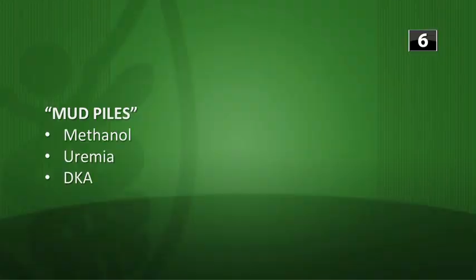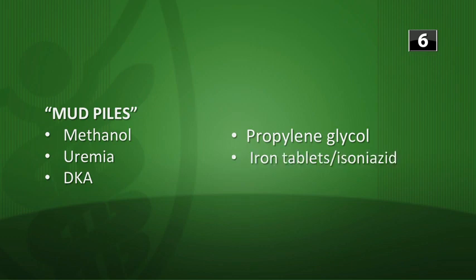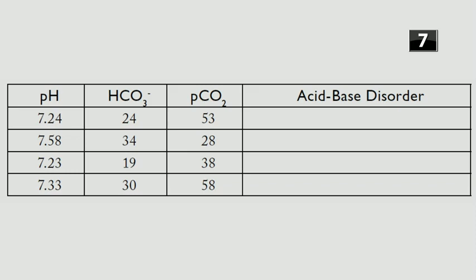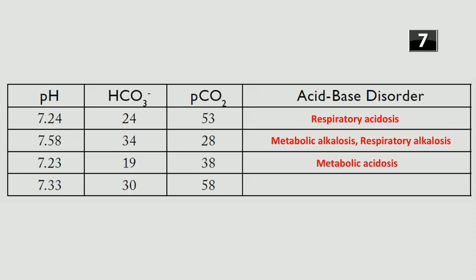End-of-session quiz: first question — causes of high anion gap metabolic acidosis. The mnemonic is MUD PILES: methanol, uremia, DKA, propylene glycol, iron tablets and isoniazid (INH), lactic acidosis, ethylene glycol, and salicylates. For ABG practice: pH 7.24, bicarb 24, PCO2 53 — pure respiratory acidosis. pH 7.58 — combined metabolic alkalosis and respiratory alkalosis. pH 7.23 — pure metabolic acidosis.